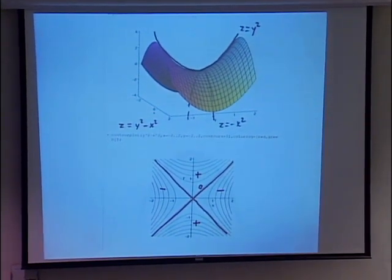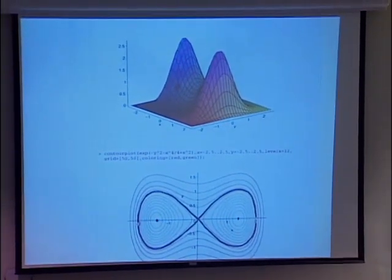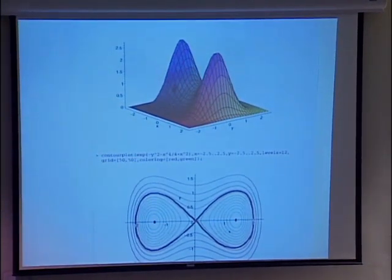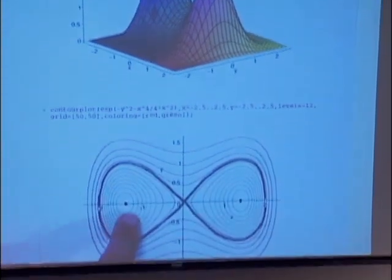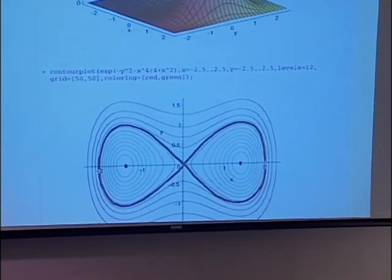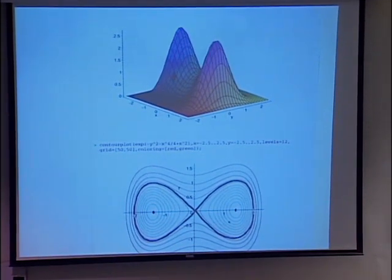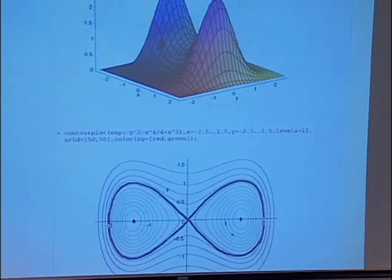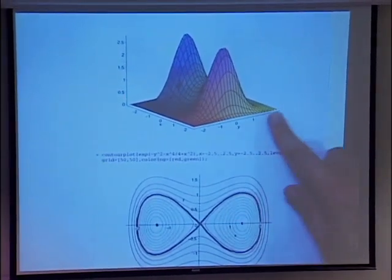Of course, if you have a real function, it will be more complicated and will have several critical points. In this example, you can see on the plot that there are two maxima, and in the middle between them there is a saddle point. You can see them on the contour plot: the maxima appear where level curves become circles that narrow down and shrink to the maximum. The saddle point appears where a level curve makes a figure eight and crosses itself.